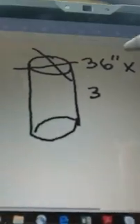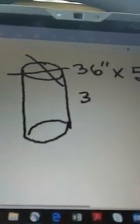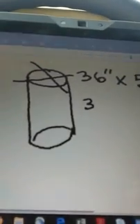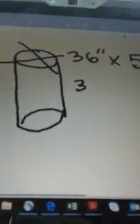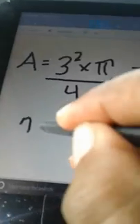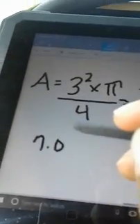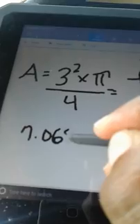That gives you 7.068 square feet. That's the area at the top of the circle, because this thing is going to go by what the area is for every square foot of it.